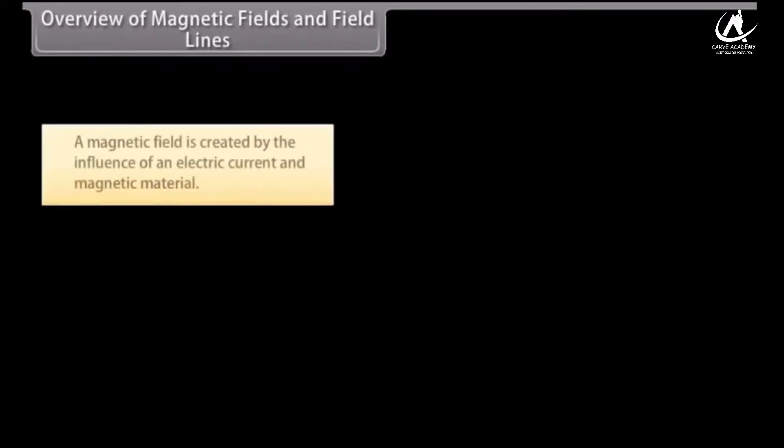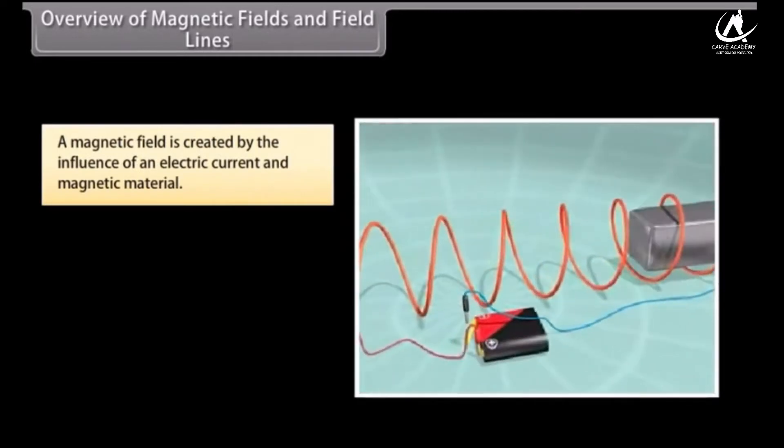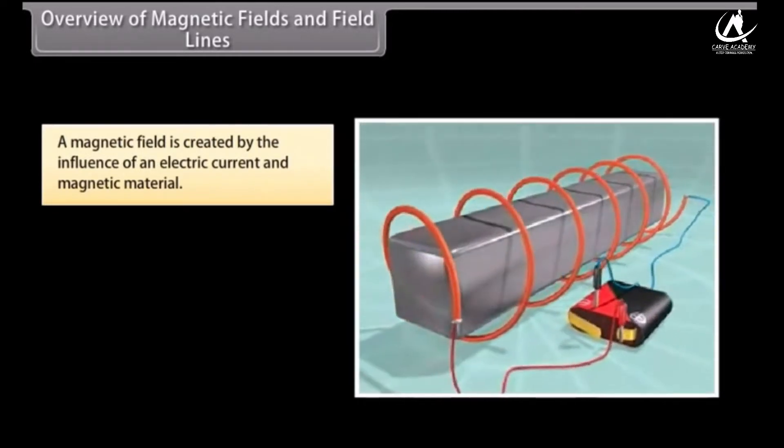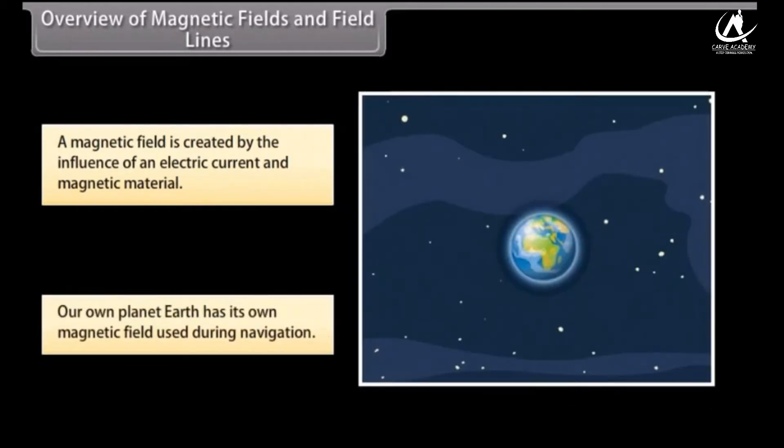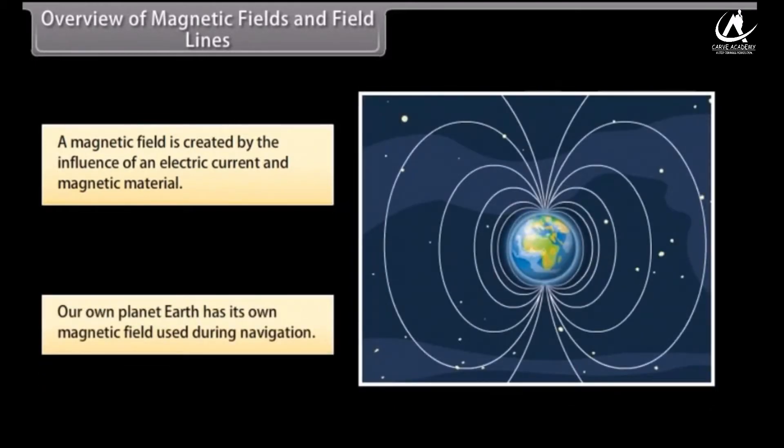Overview of magnetic fields and field lines. A magnetic field is created by the magnetic influence of an electric current and magnetic material. Our planet Earth produces its own magnetic field, which is an important factor during navigation. Magnetic fields are also used in electric devices such as transformers.